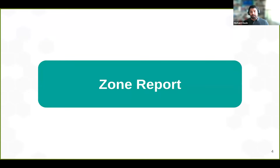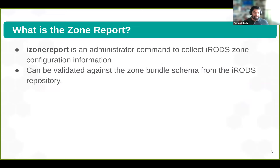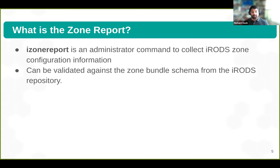Moving on to what I actually did — I was brought on to update the zone report. What is the zone report? The iZone report is an iCommand that can be used by administrators to collect information from all servers in a zone about the iRODS configuration. The zone report is printed in JSON format and can be checked against the zone bundle schema in the iRODS repo using a JSON schema validator.